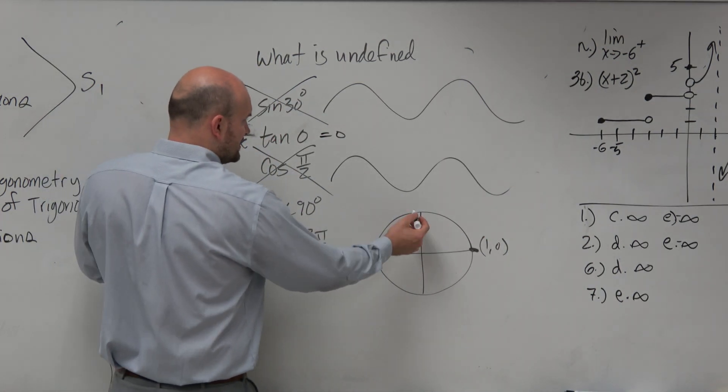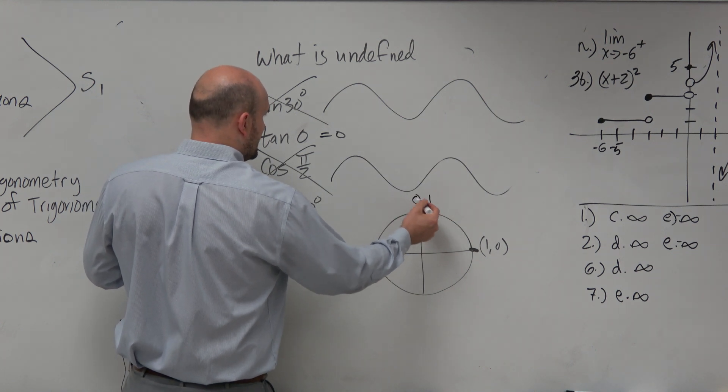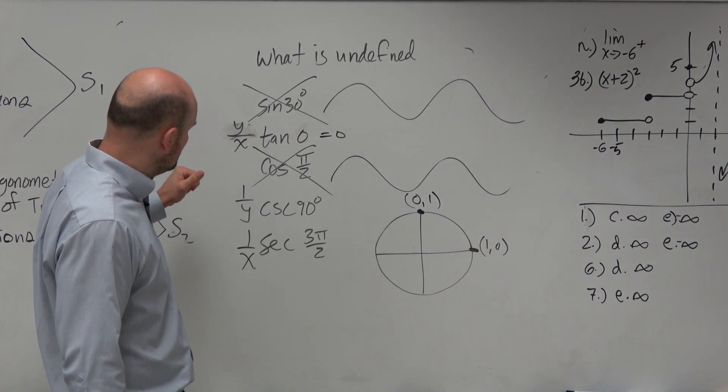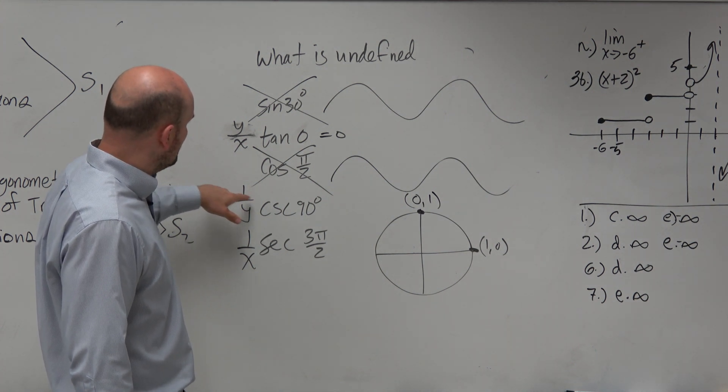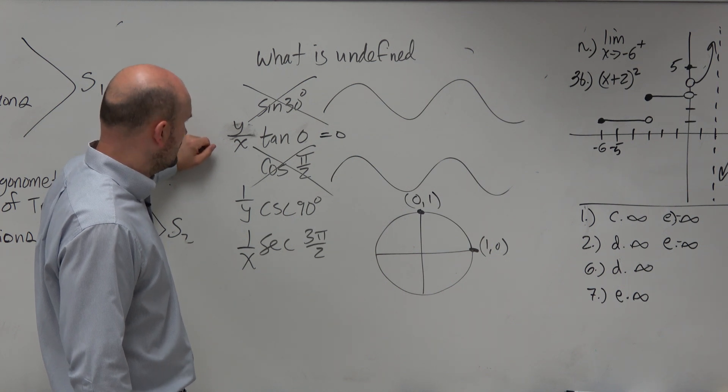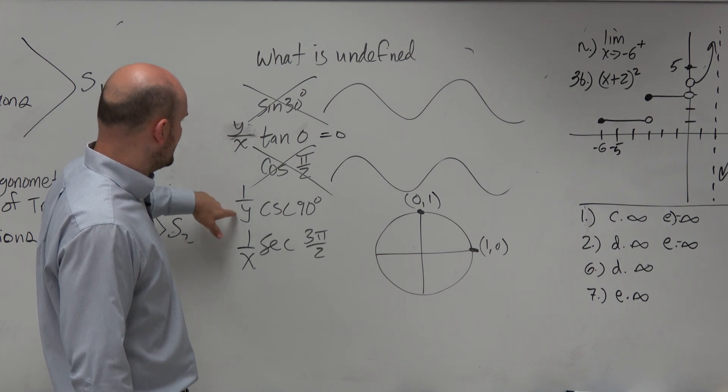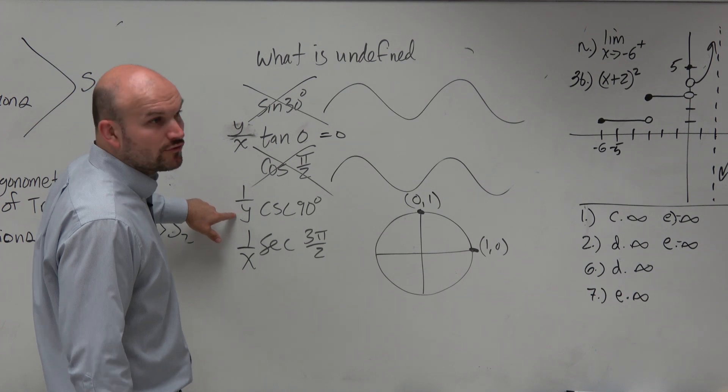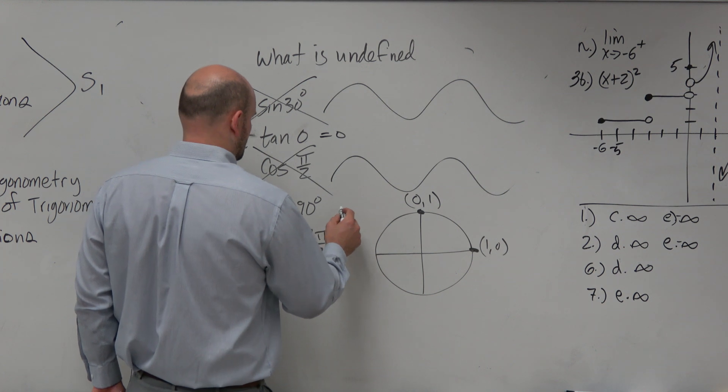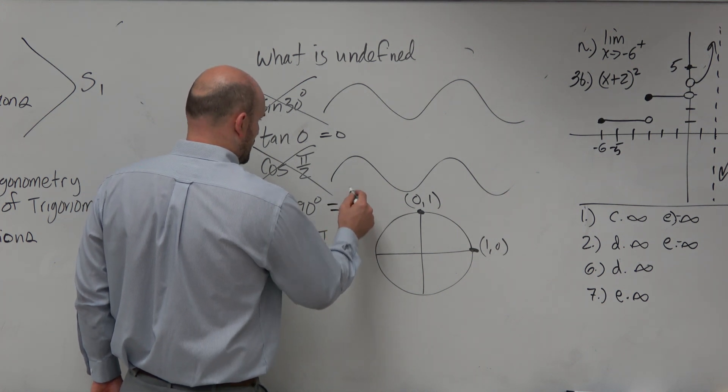Cosecant of 90 degrees. That point is right here. That point is 0 comma 1. And actually, in this case, you can see that is going to be 1 over 0, which would be—oh, I'm sorry, the y-coordinate is 1. So that'd be 1 over y. So that one doesn't work. Or that one does work. 1 over y, which is 1.